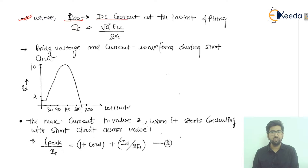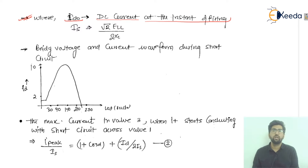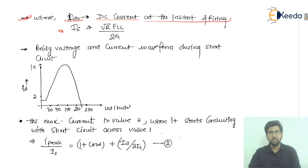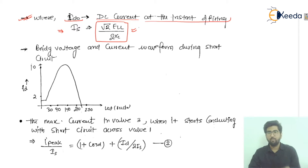id₀ is the DC current at the instant of firing — whatever DC current is flowing when the gating pulse is given to the thyristor for conduction. The value of is is: is = √2 · L / (2·Xc), where L is the line-to-line voltage and Xc is the reactance. We have discussed this in the bridge rectifier.